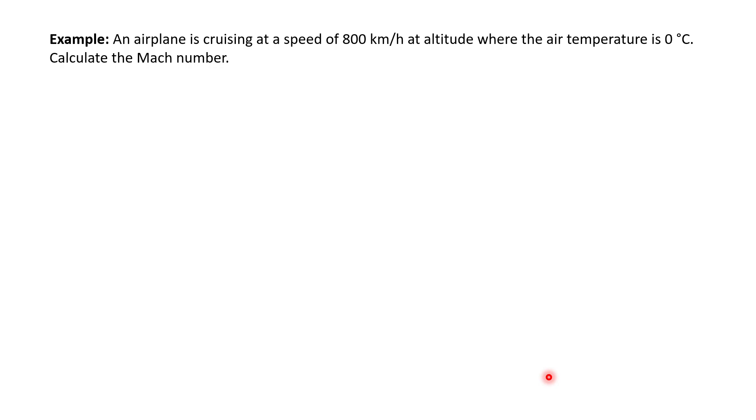An airplane is cruising at a speed of 800 kilometers per hour at altitude where the air temperature is 0 degrees Celsius. Calculate the Mach number. This is easy. The first thing we do is try to get the information about the gas. In this case, the k value is 1.4.